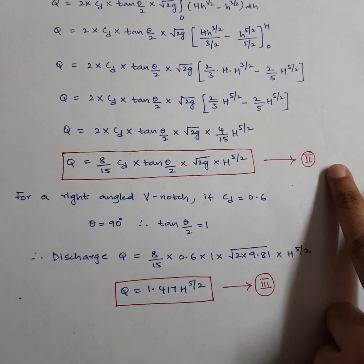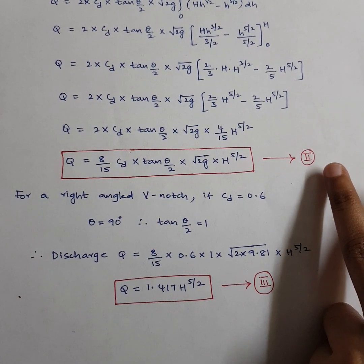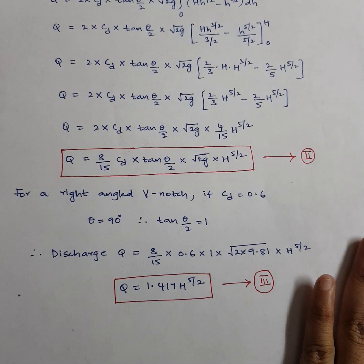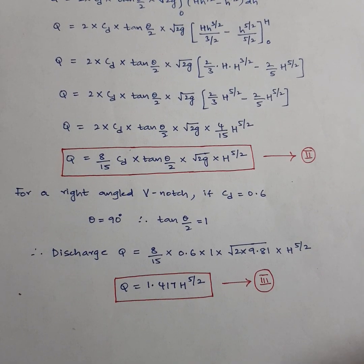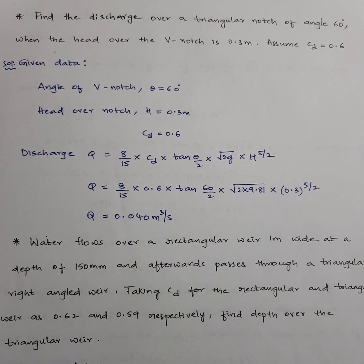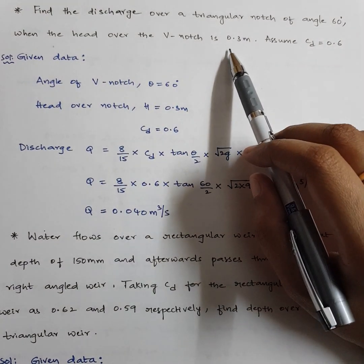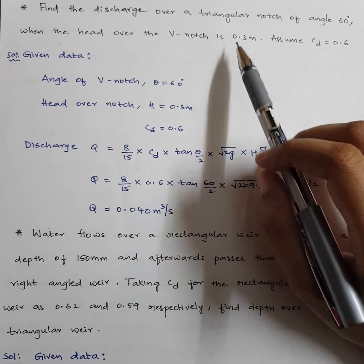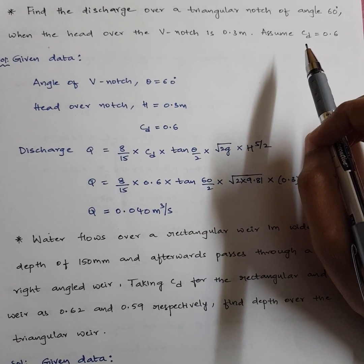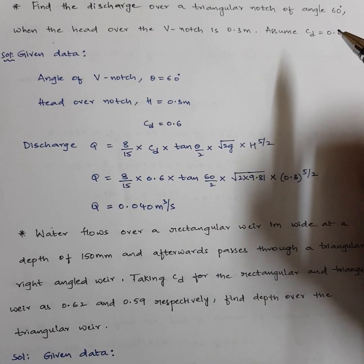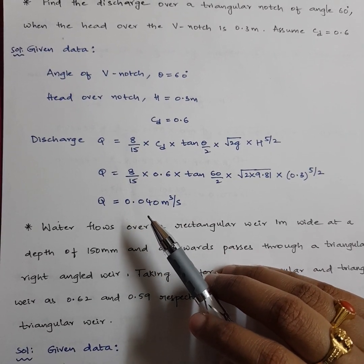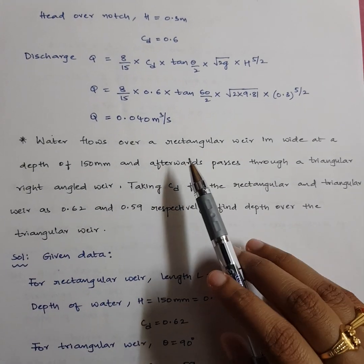To calculate discharge, you need CD, theta, and H. Now let's solve some problems. Problem 1: Find the discharge over a triangular V-notch of angle 60° when head over the notch is 0.3 m and CD = 0.6. Given: theta = 60°, H = 0.3 m, CD = 0.6. Directly substituting into Q = (8/15)·CD·tan(theta/2)·root(2g)·H^(5/2) gives Q = 0.040 m³/s.